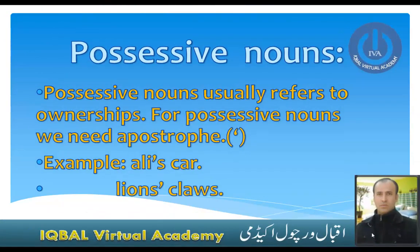Next is possessive nouns. Possessive nouns usually refer to ownership. For possessive nouns we need an apostrophe. For example, 'Ali's car' — Ali owns the car. Since Ali is one person, we put an apostrophe then S. So 'Ali's car' shows the ownership between Ali and the car.